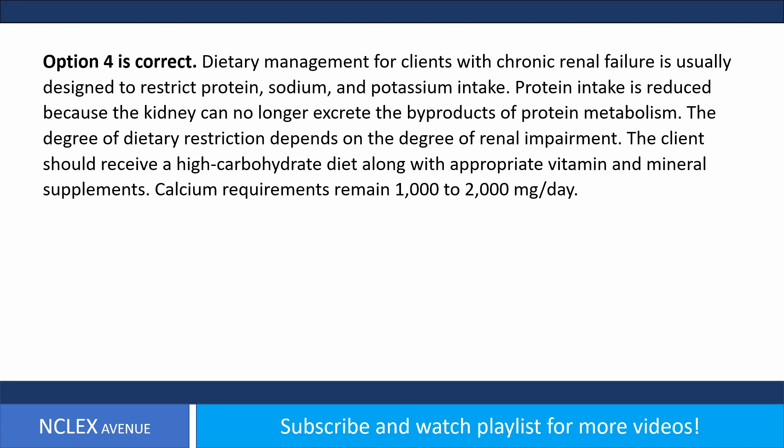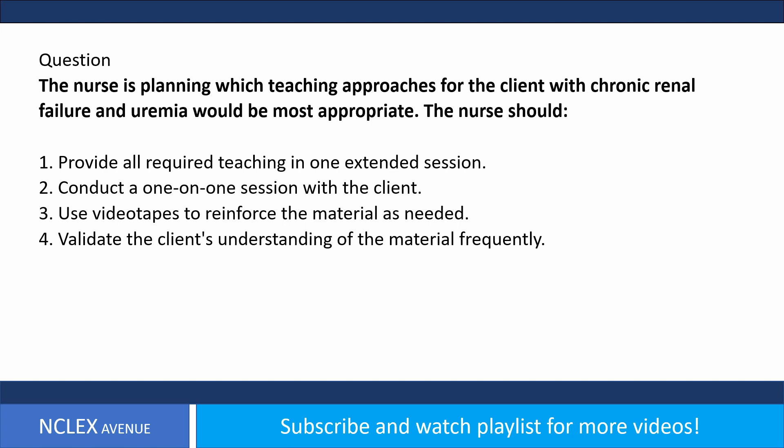Dietary management for clients with chronic renal failure is usually designed to restrict protein, sodium, and potassium intake. Protein intake is reduced because the kidney can no longer excrete the byproducts of protein metabolism. The degree of dietary restriction depends on the degree of renal impairment. The client should receive a high-carbohydrate diet along with appropriate vitamin and mineral supplements. Calcium requirements remain 1,000 to 2,000 milligrams per day.